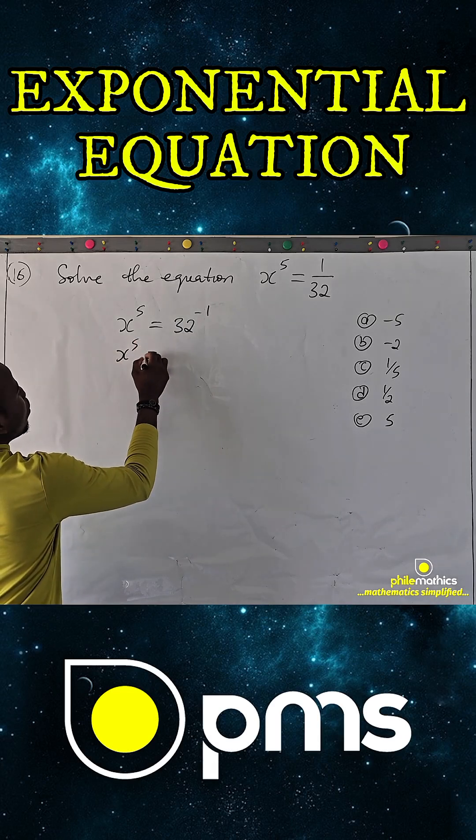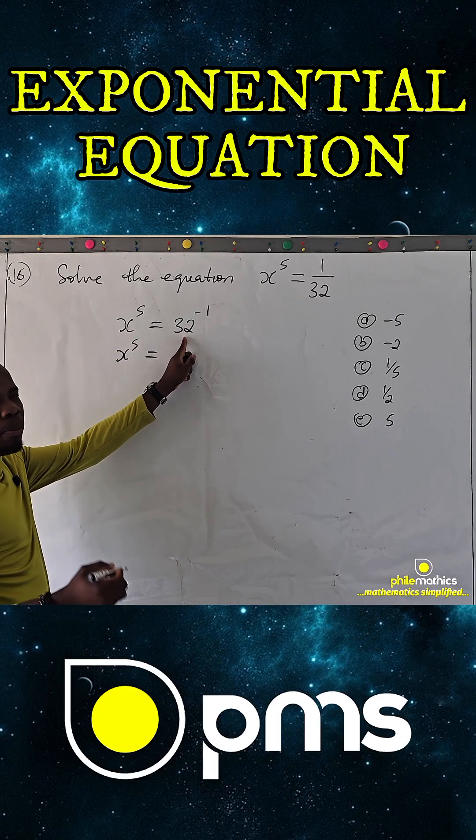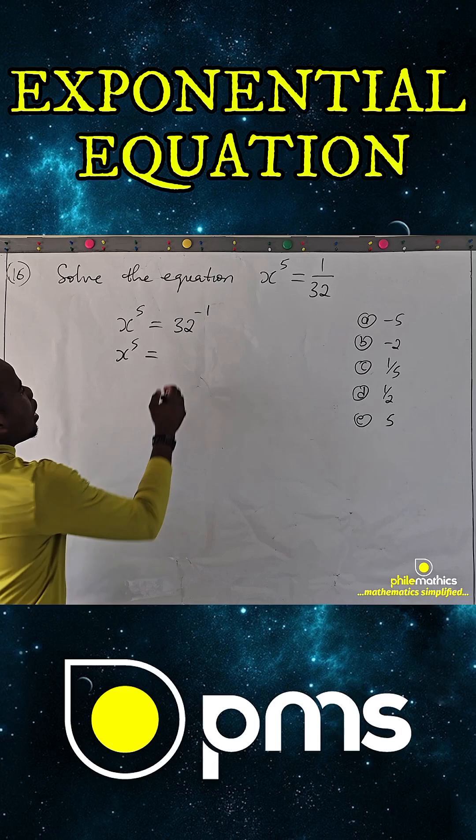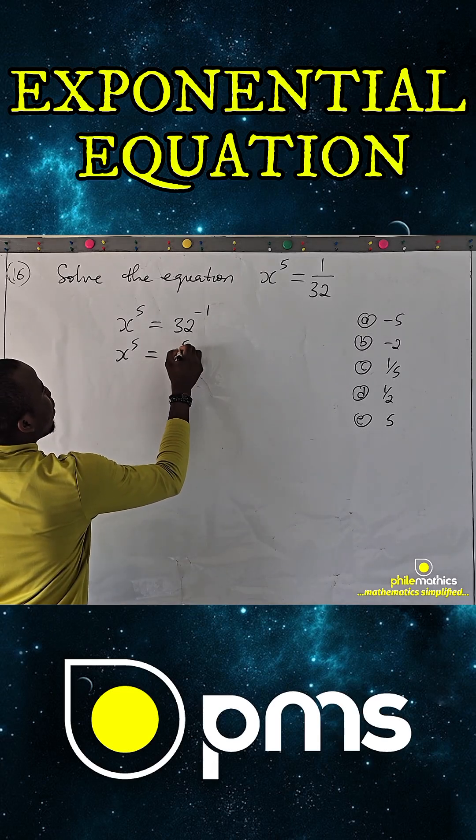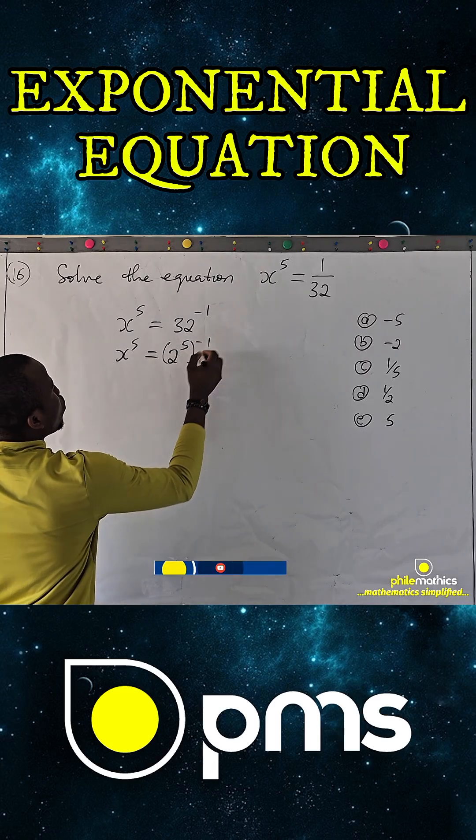So x to power 5, I can put 32 in base of 2, and it is 2 to power 5 to power minus 1.